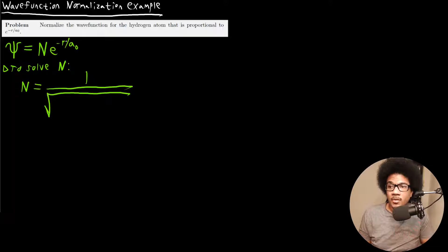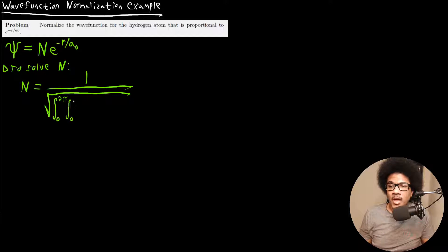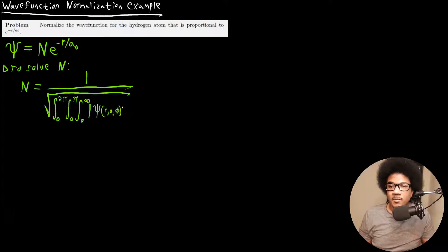Since we're dealing with r here, this is in spherical polar coordinates, so all space available to this wave function will be over spherical polar coordinates: r, theta, and phi. We're going to have to do a triple integral, integrating phi from 0 to 2π, theta from 0 to π, and r from 0 to infinity of this wave function squared. The volume element, reviewing from the last video, is r² sin(θ) dr dθ dφ.